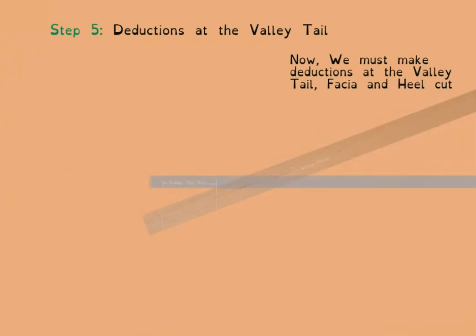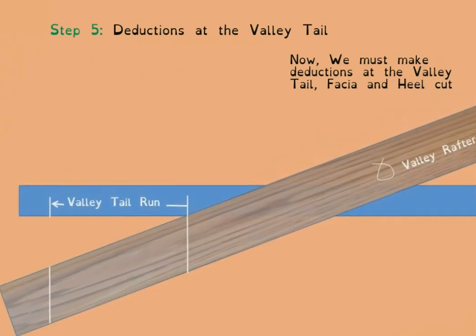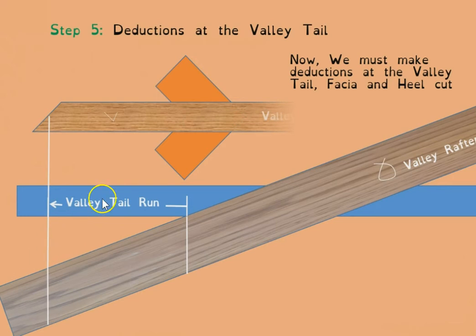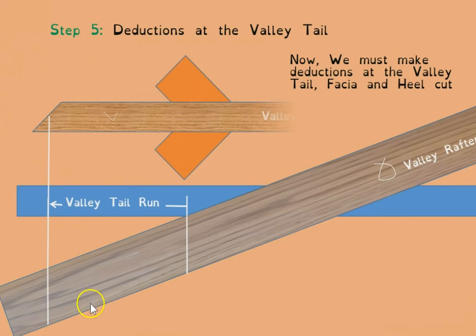These are initial lines — deductions will need to be made afterwards. Moving on to deductions at the valley tail: there's a fascia cut and a heel cut to look at. Zooming in close to where the side square and the rafter meet, you can see the side square with the side of the valley rafter, and a plan view of that same valley rafter, with the corner of the wall plate shown in orange.